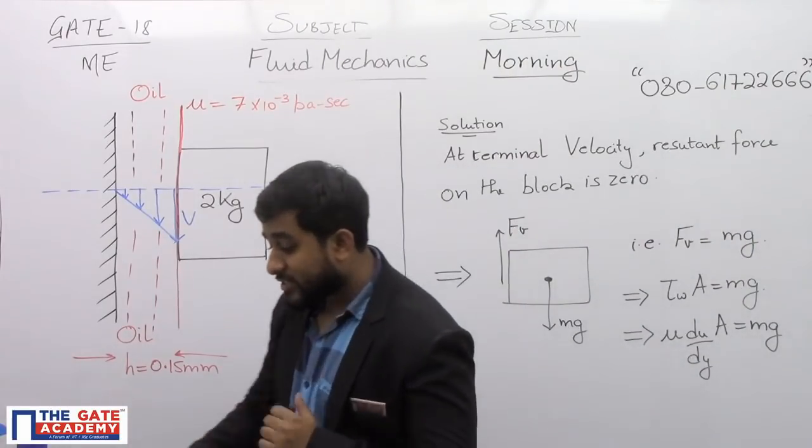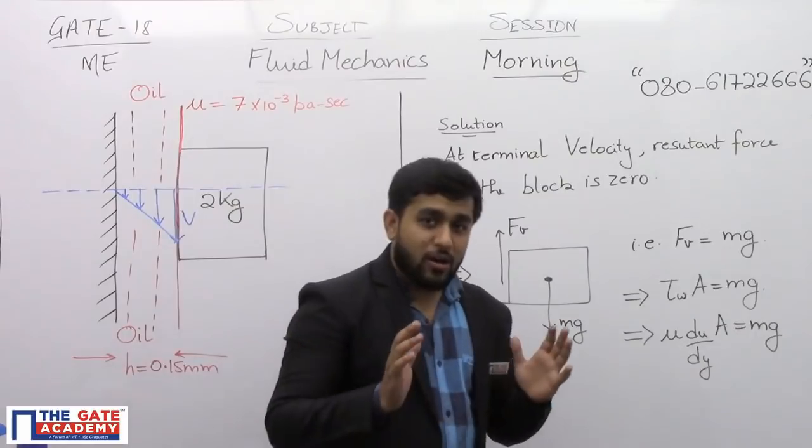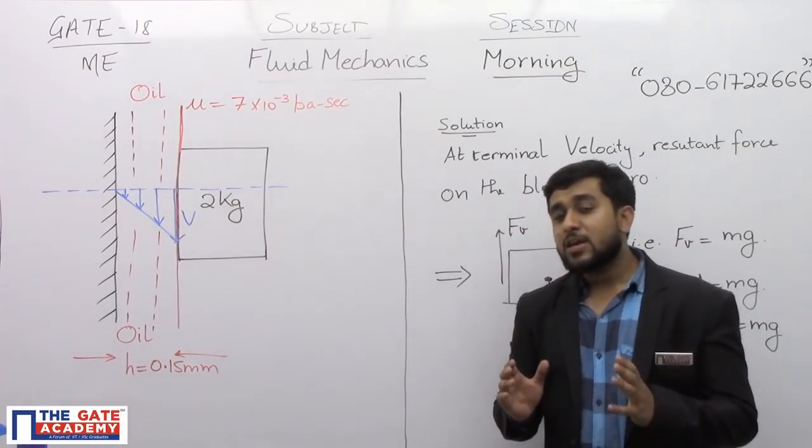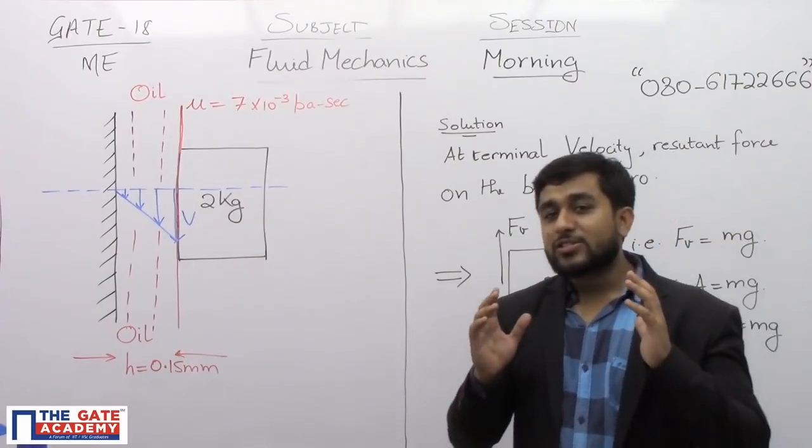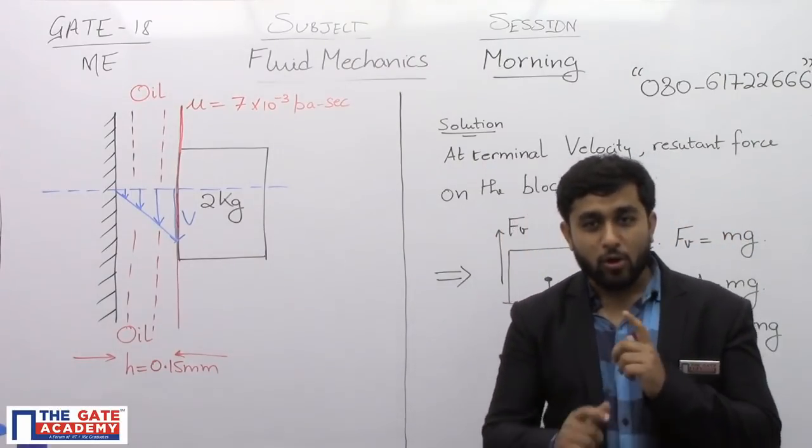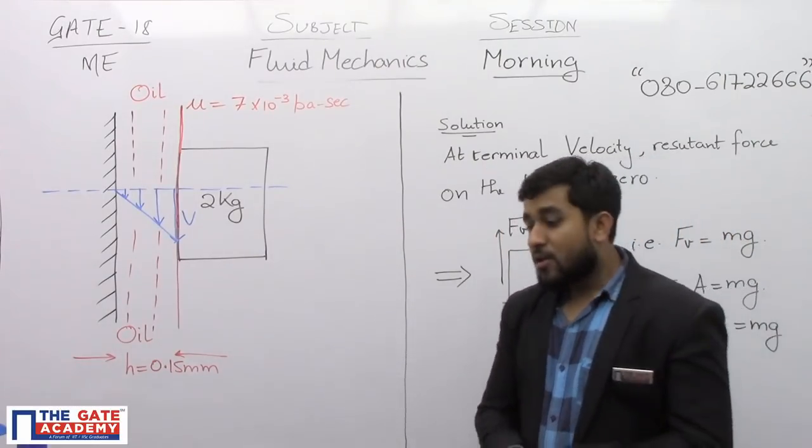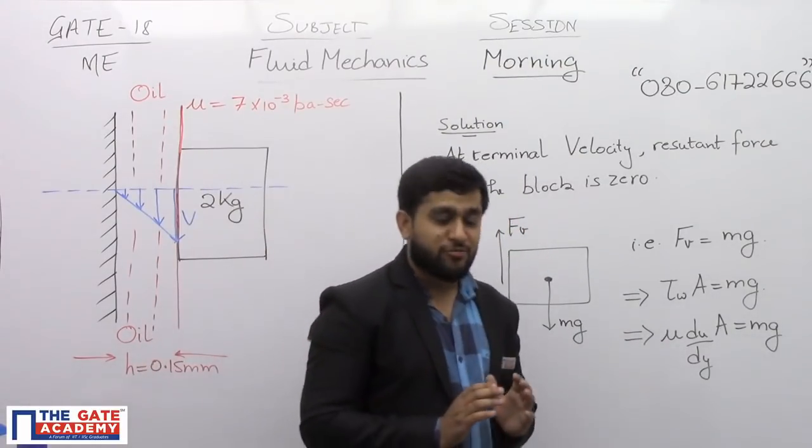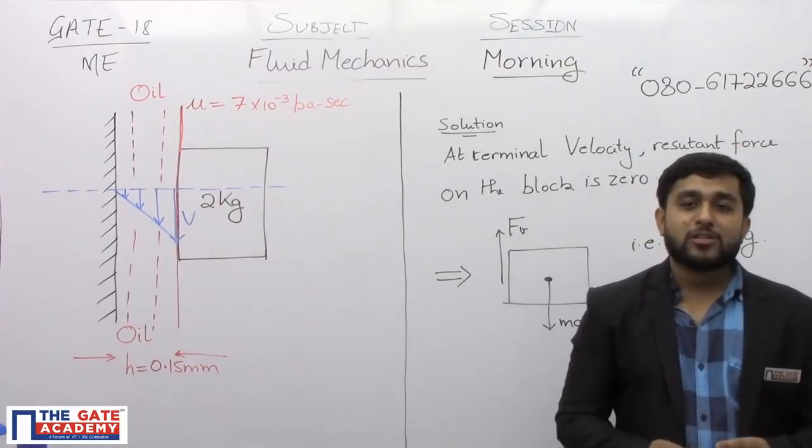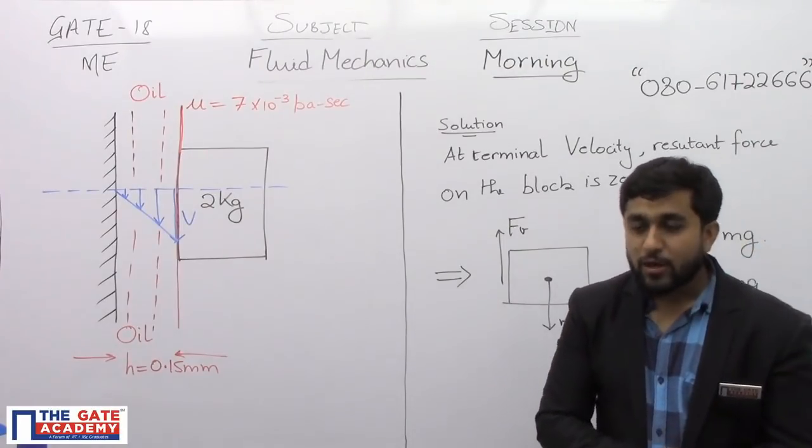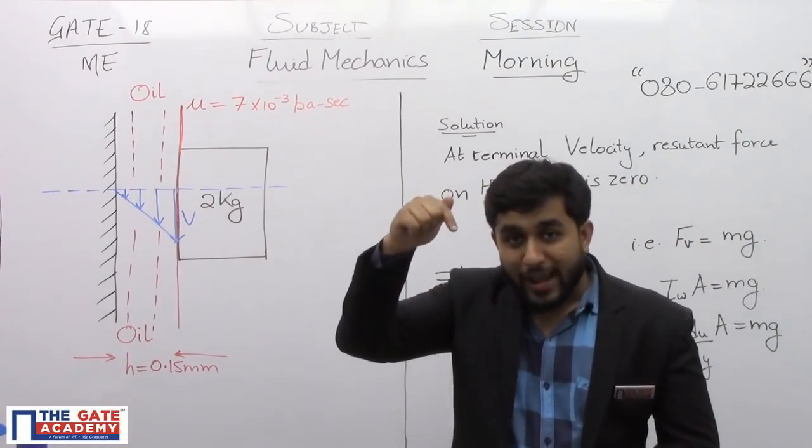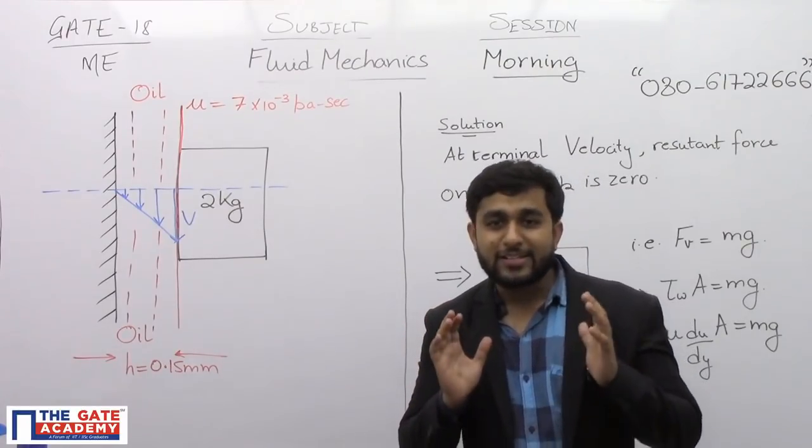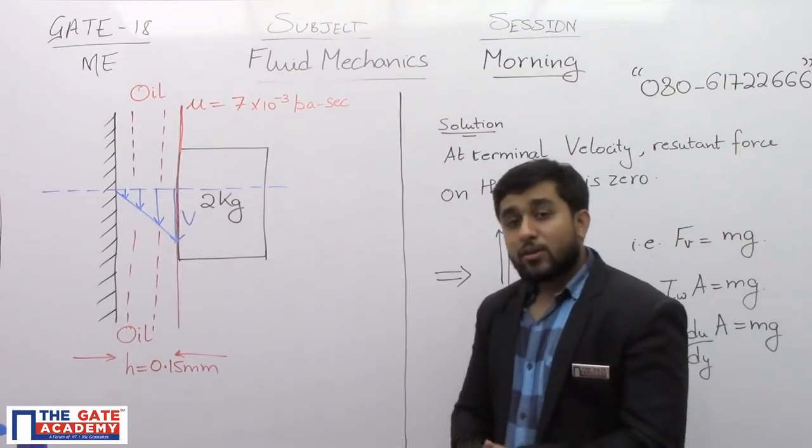First of all, let us see what is terminal velocity. Whenever a body moves in a fluid mass, the fluid mass exerts a drag force on the body in the opposite direction. For example, let us talk about the rain droplets, water droplets in form of rain. When those droplets fall from the cloud because of their weight, they keep on accelerating towards the ground and their speed, that is the magnitude of their velocity, keeps on increasing.